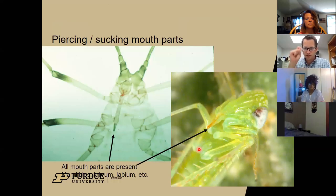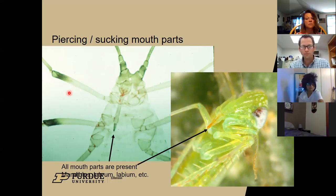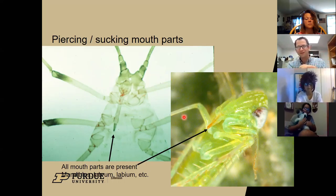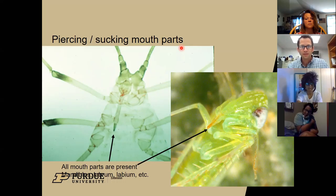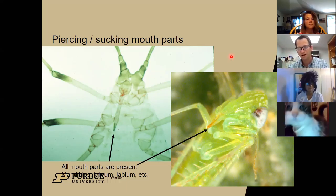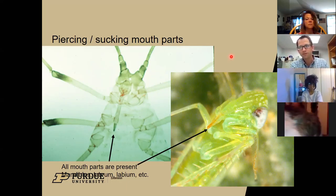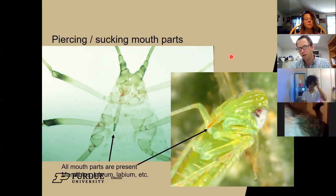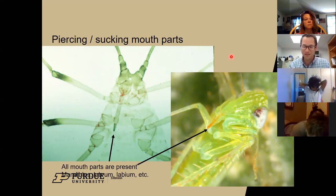For piercing and sucking mouth parts, there's a long needle-like structure. These are mainly for plants - things like aphids and leafhoppers will pierce inside, and since plants need water to grow they've got liquid in there that's how they feed. Mosquitoes also have the piercing and sucking type. Some insects will even catch other insects and pierce them with their mouth part and suck out their insides - kind of gross, but that's bugs for you.